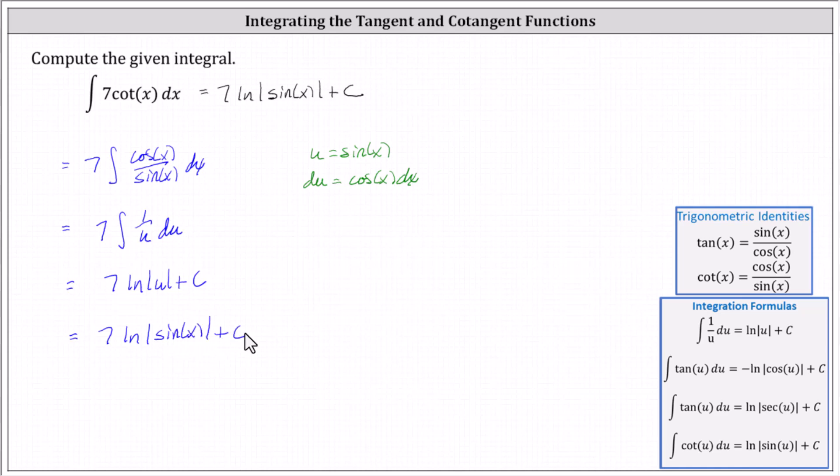By showing the second method, hopefully it becomes much more clear why the natural log function appears in the antiderivative of the cotangent function. I hope you found this helpful.